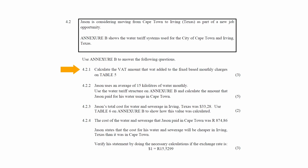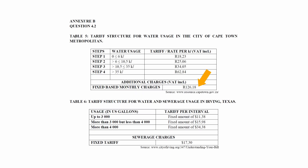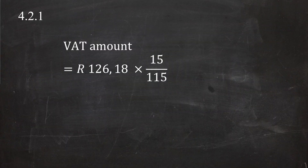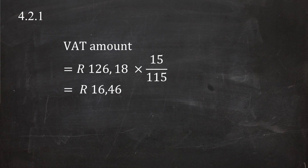In question 4.2.1, you are instructed to calculate the VAT amount that was added to the fixed base monthly charges on Table 5. From Table 5, the fixed base monthly charge is listed as R126.18 VAT inclusive. VAT inclusive means that 15% VAT has already been added, so the VAT inclusive percentage is 115%. To calculate the VAT amount, multiply R126.18 by 15/115, which equals a VAT amount of R16.46.